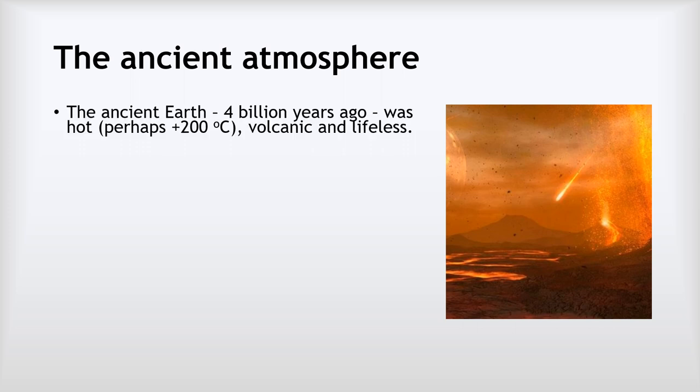Let's have a look at the ancient atmosphere. Now the ancient earth, we're talking somewhere around four billion years ago, was very hot, you know perhaps over 200 degrees celsius. It was very volcanic, far far more volcanoes than there are now, and it was lifeless. Life had not had a chance to evolve that early in our history.